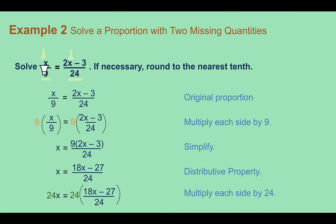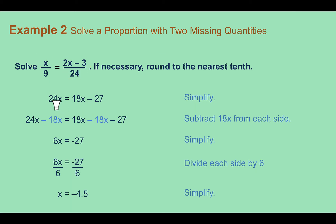So first, we're going to multiply both sides by 9, as shown down here. And then we're going to multiply both sides by 24. That way, when we do that, we end up with two expressions that are no longer fractions. A quicker way you could get to this is by simply cross-multiplying. 24 times x is 24x. 9 times the quantity 2x minus 3 gives you 18x minus 27.